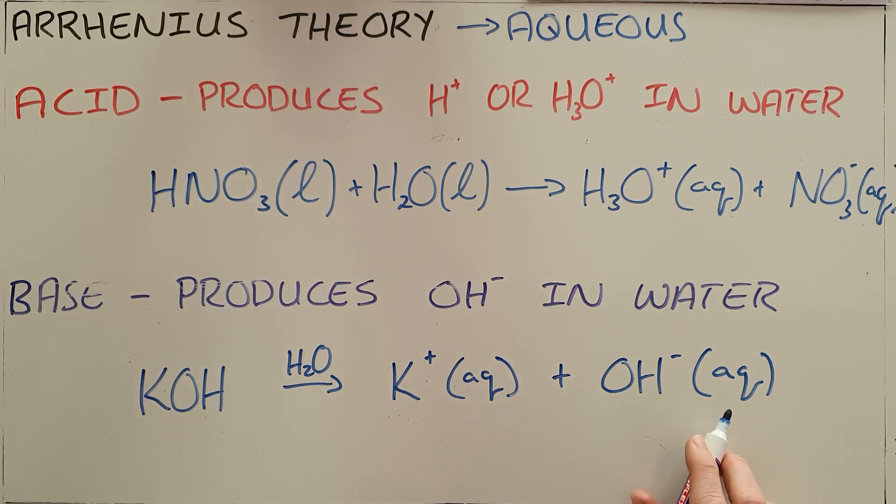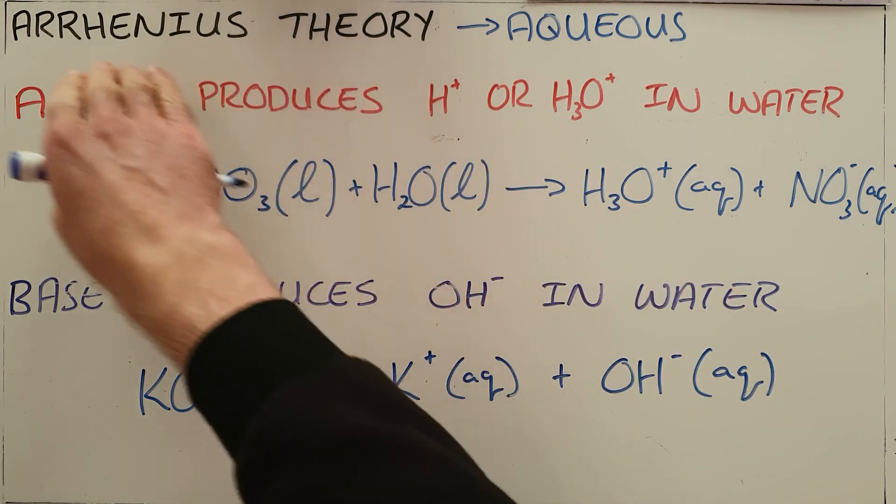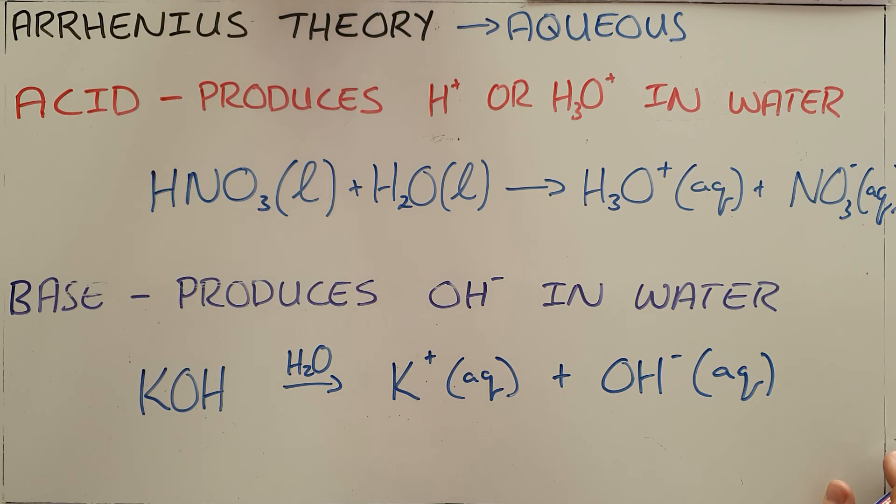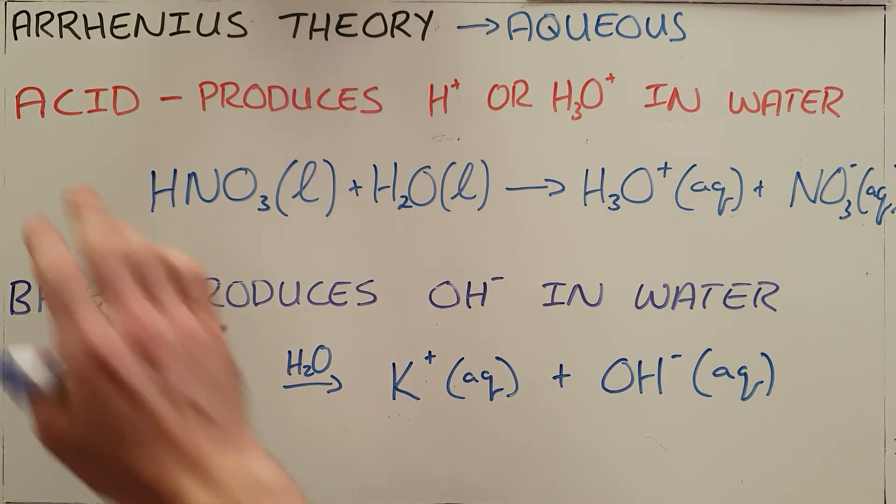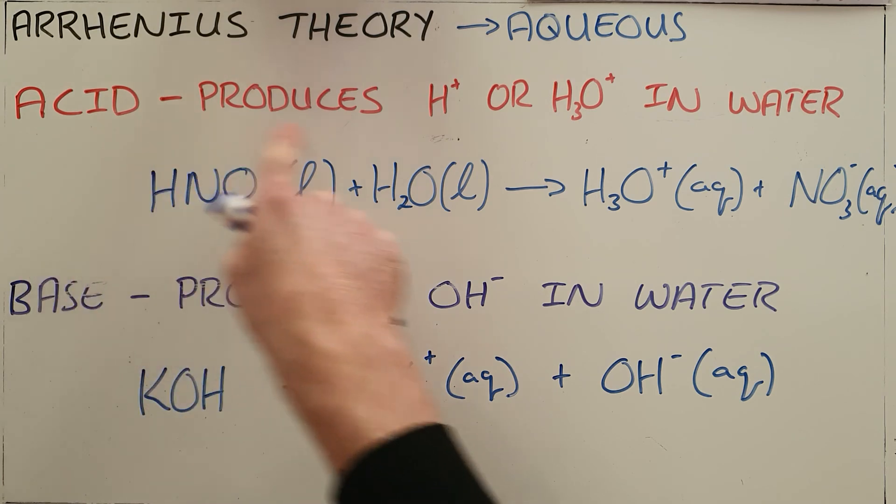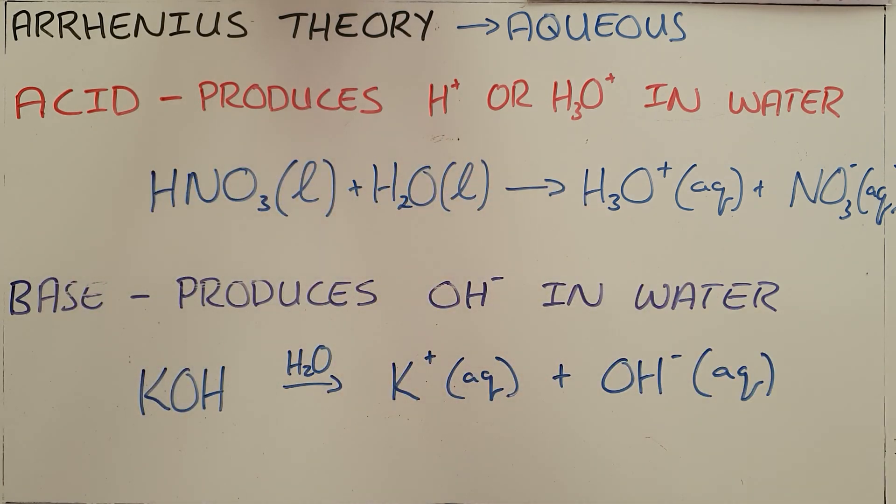So the Arrhenius theory is specifically aimed at explaining the properties and behavior of aqueous solutions of acids and bases. An Arrhenius acid is any substance that produces hydrogen or hydronium ions in water and an Arrhenius base is any substance that produces hydroxide ions in water.